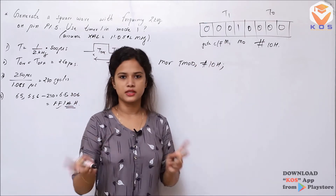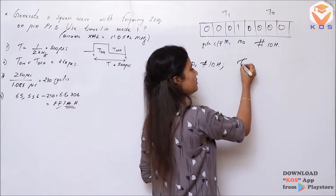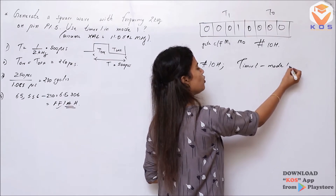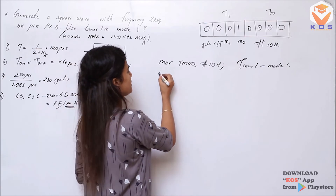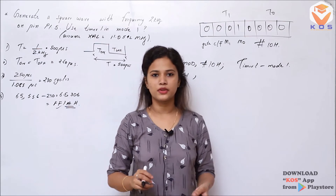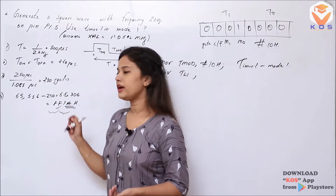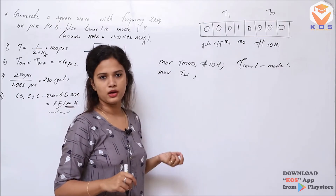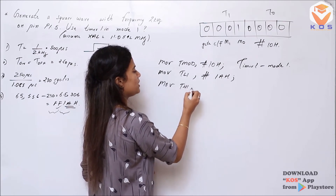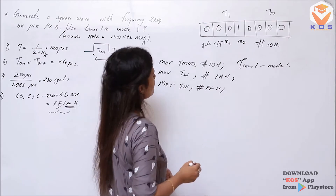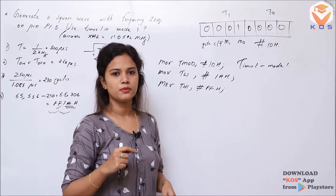Timer 1 is used in Mode 1 as a 16-bit timer. We load the TL1 and TH1 registers. The value FFE1H is split: lower byte is 0E1H and higher byte is FFH. Move the lower byte to TL1: MOV TL1, #01H. Move the higher byte to TH1: MOV TH1, #FFH. The TMOD register selects the mode of operation — whether the timer runs as a counter or timer — and selects the team mode for the two registers.